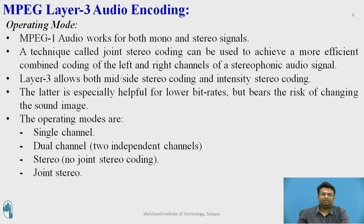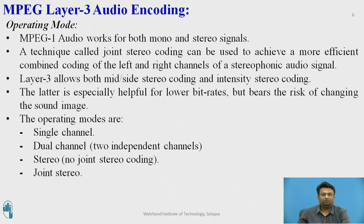Let us see the MPEG Layer 3 audio coding. The operating modes in MPEG audio coding: MPEG 1 audio works for both mono and stereo audio signals. A technique called joint stereo encoding can be used to achieve more efficient combined coding of the left and right channels of a stereophonic audio signal. Layer 3 allows both mid/side stereo coding and intensity stereo coding. The operating modes are single channel, dual channel (two independent channels), stereo without joint stereo coding, and joint stereo coding.